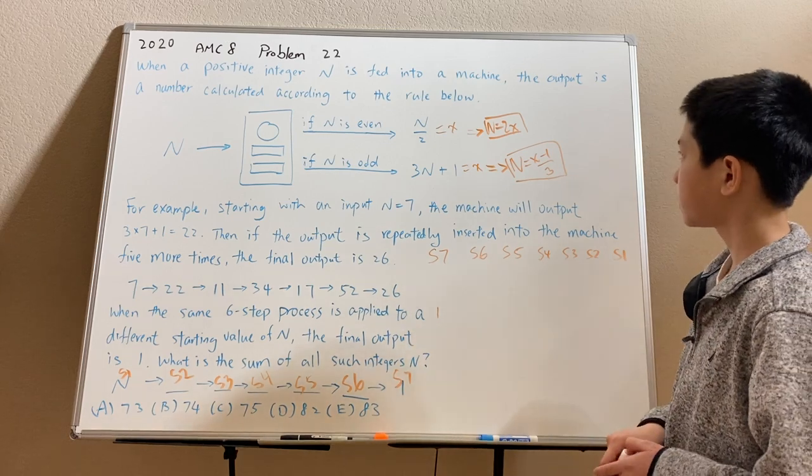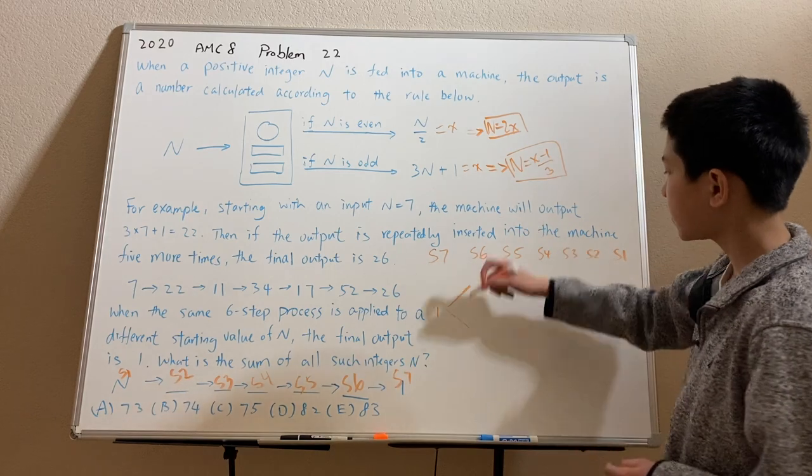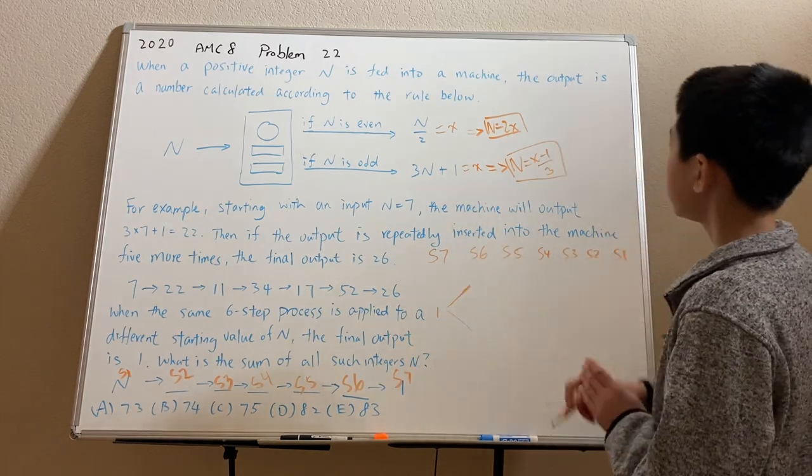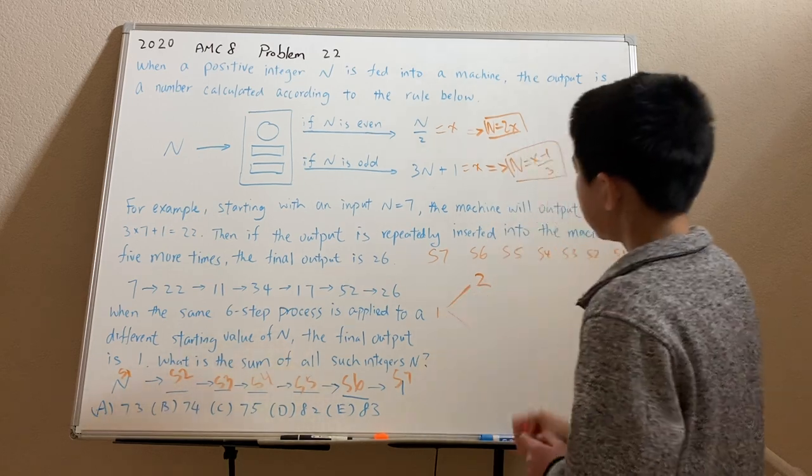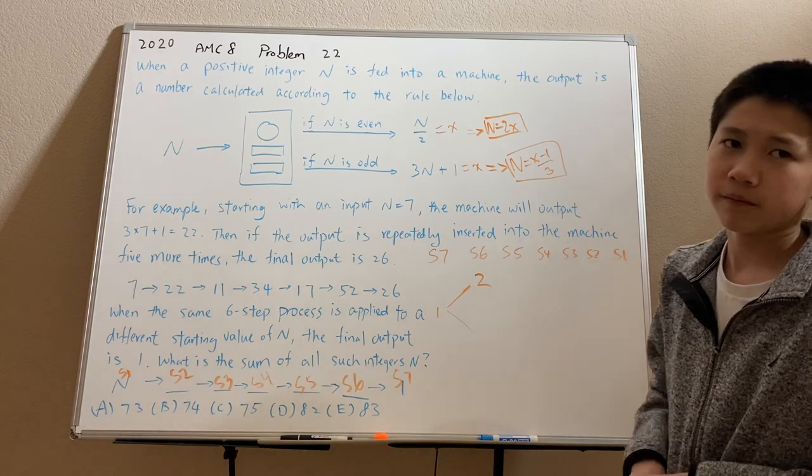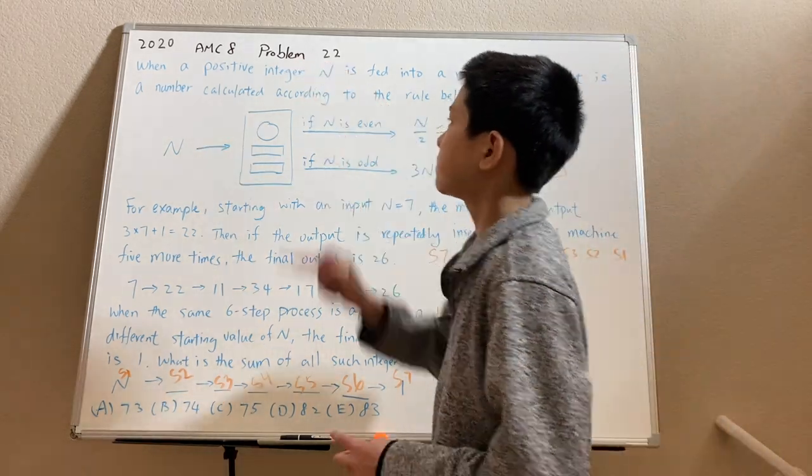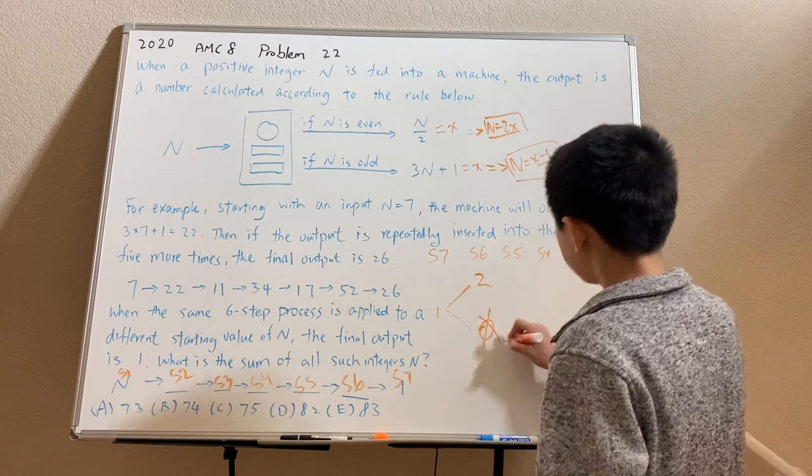So at stage 7, we have 1. Now at stage 6, we can plug in x equals 1 to the n is even formula and get n equals 2. And when we plug it into the n is odd formula, we'll get that n equals 0, which doesn't satisfy the positive integer rule. So 0 won't work.